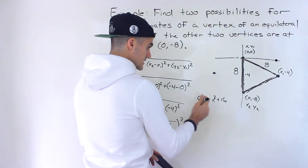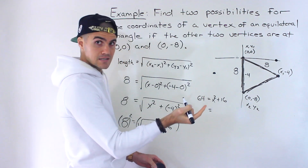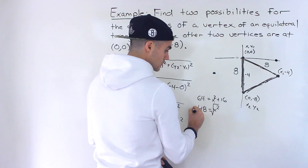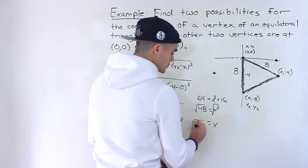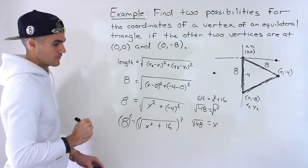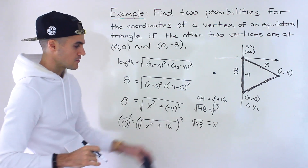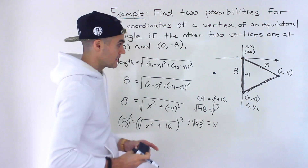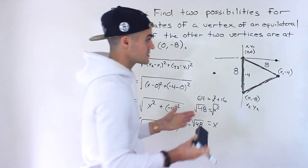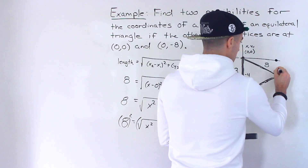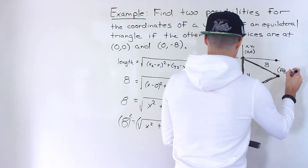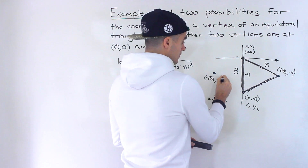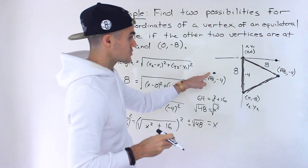Now bring the 16 over: 64 minus 16 gives us 48, so that's going to be x squared. And now to get x by itself, we square root both sides. So x would be the square root of 48. And if you square root 48, you'd get like six-point-something — I'm just going to leave it as an exact value. Notice that when you square root something, it could be plus or minus. So that's where the other x value is coming from. So the point over here is actually going to be the square root of 48 and negative four. And then this point over here is going to be negative square root of 48 and negative four.